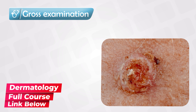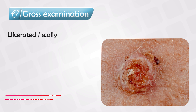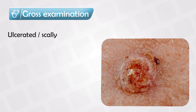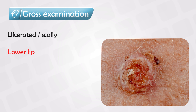Grossly, these lesions will be ulcerated or scaly. In fact, the most common presentation is a scaly lesion that does not heal. It can involve any area in the body, but mainly the sun-exposed areas — the face, the neck, the arms and hands. If it involves the face, it tends to favor the lower lip.